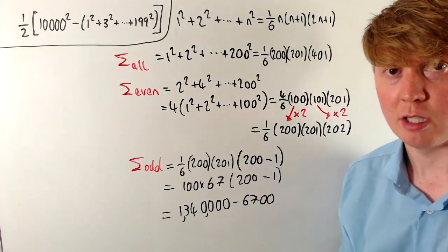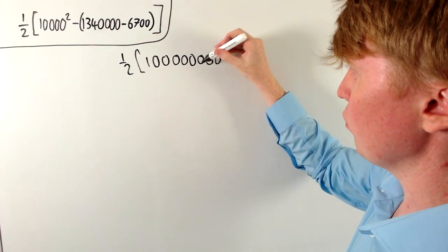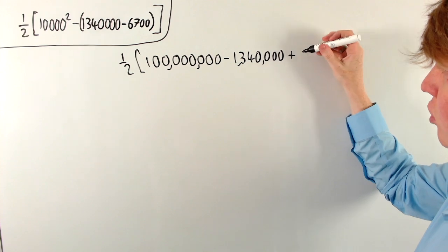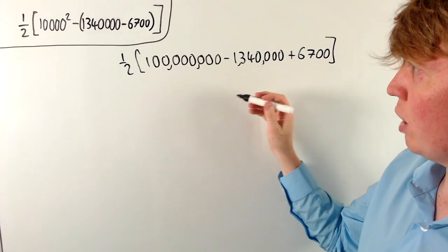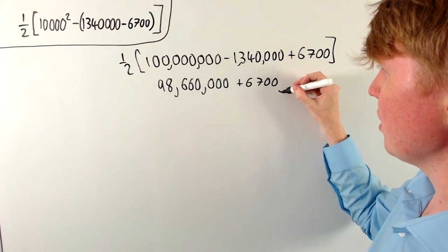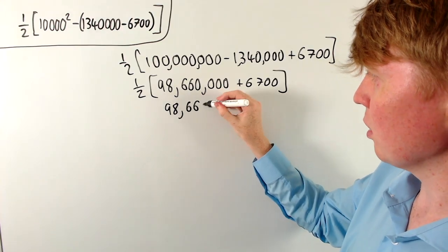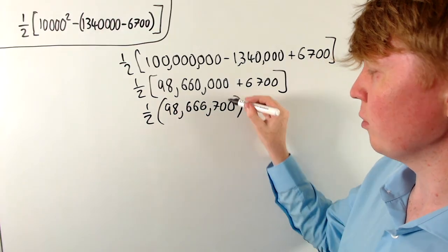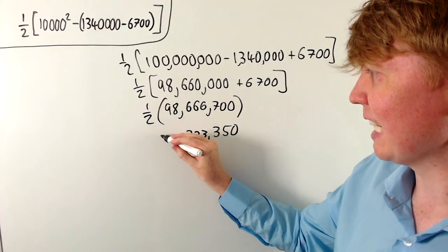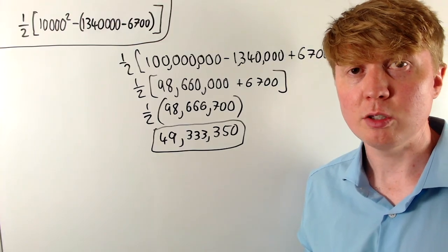Now substituting back: c = (1/2)·(100,000,000 − 1,333,300 + 6,700). First, 100,000,000 − 1,340,000 = 98,660,000, then adding 6,700 gives 98,666,700. Dividing by 2: 700÷2=350, 333 stays as 33,3__, and 98÷2=49, giving 49,333,350. So the coefficient of x^98 in the original expanded product is 49,333,350.